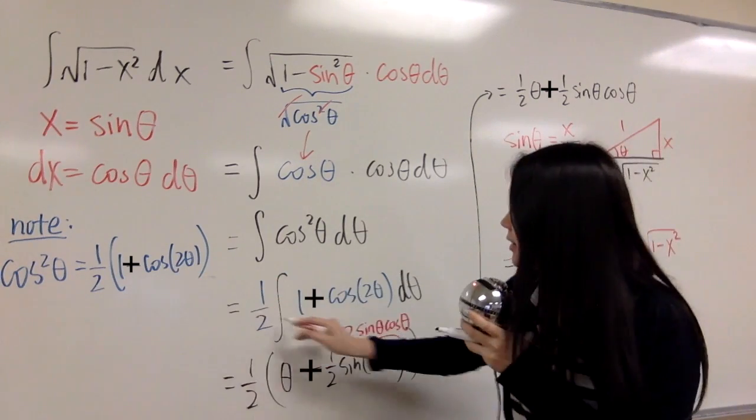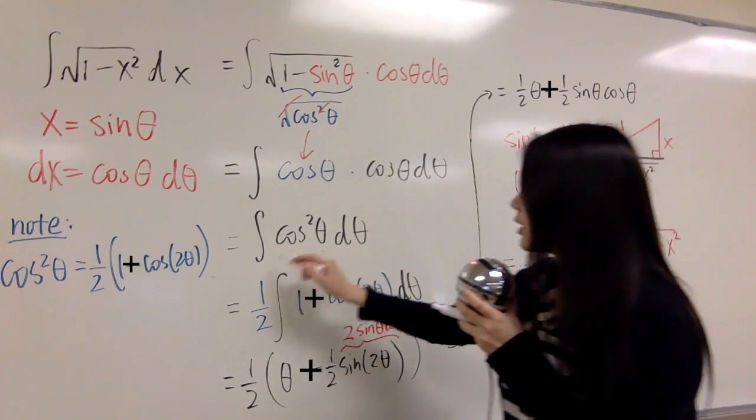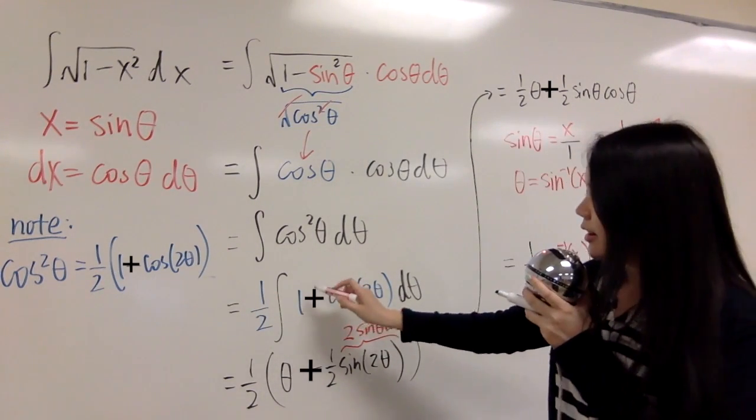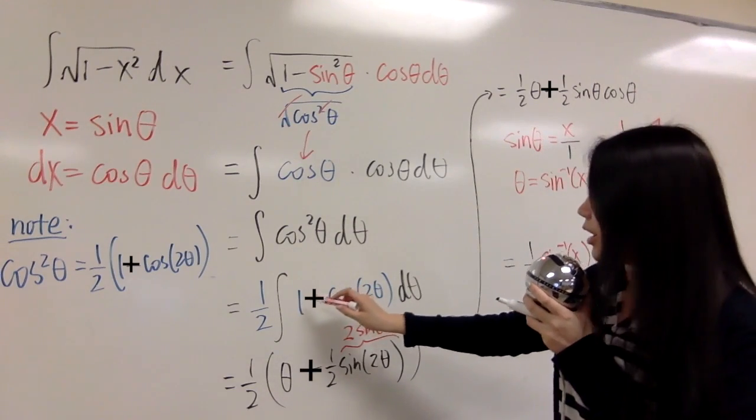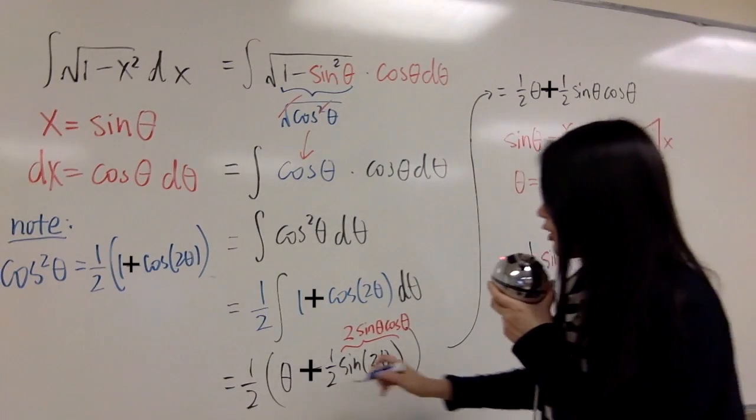So we put it back here, 1 over 2 is constant, so we can put it in front, then that's integral of 1 minus cosine 2 theta, we can now do integration.